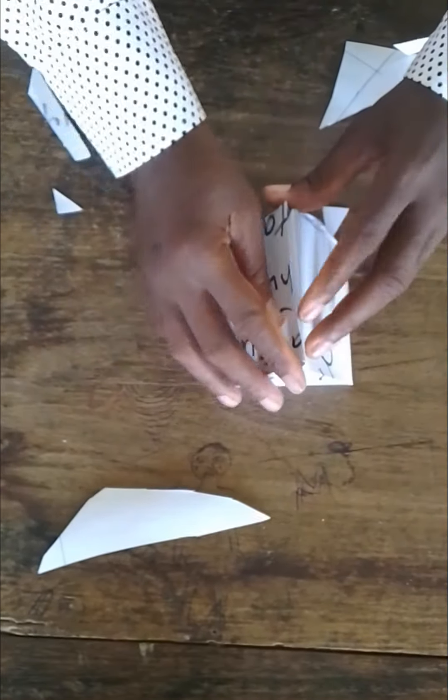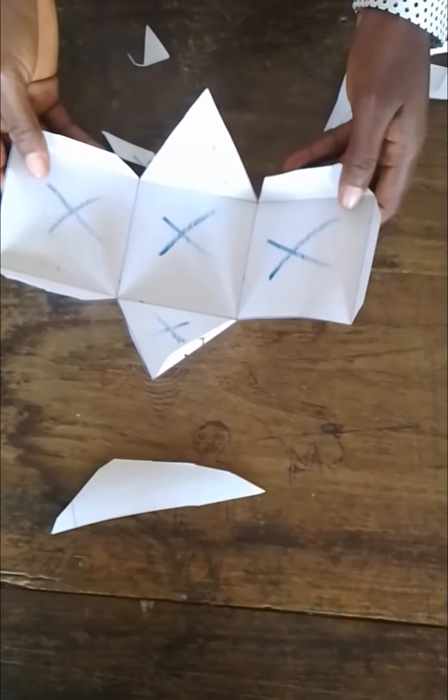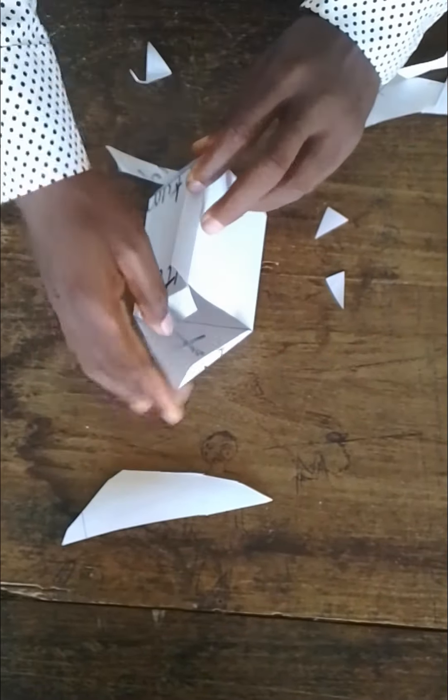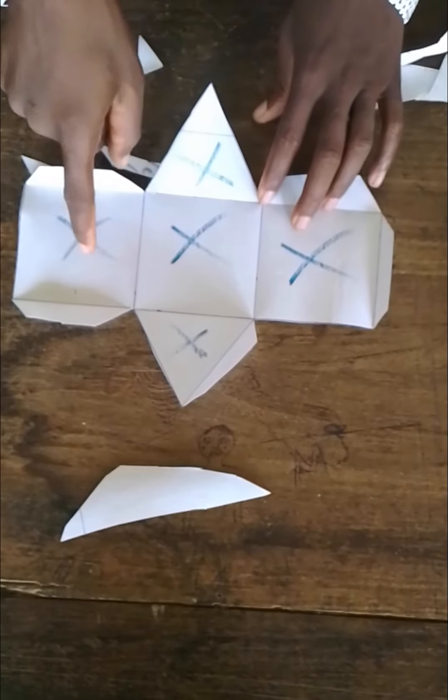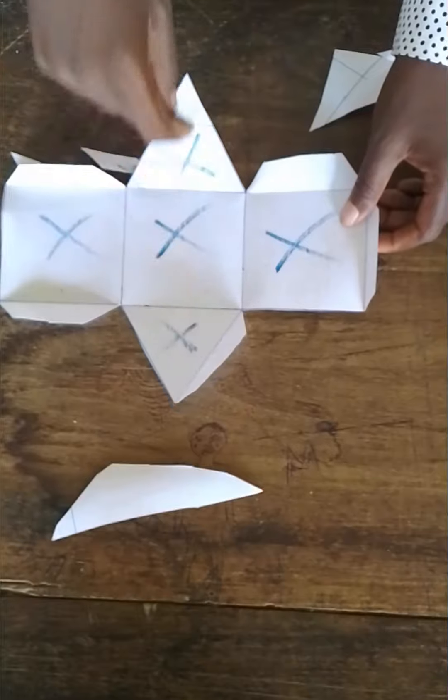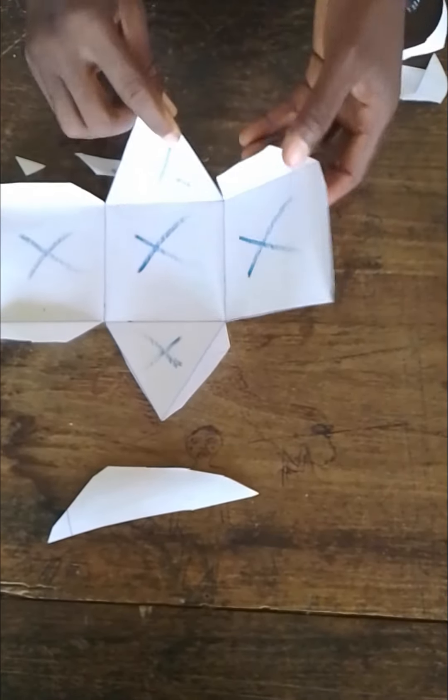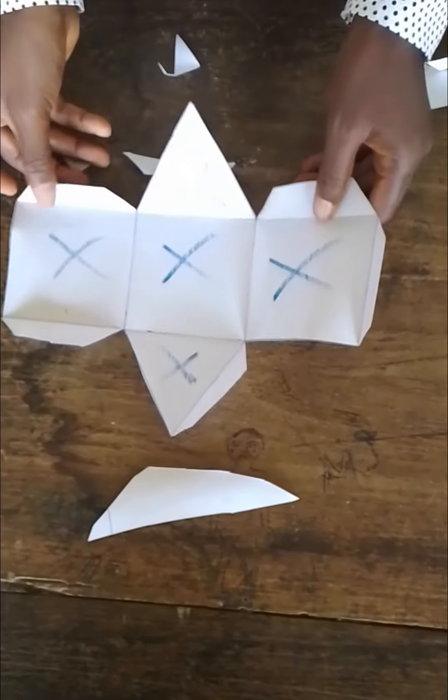If I close this now, in calculating the total surface area of this prism, you can see it has one, two, three squares. You are going to find the areas of these three squares and the areas of these two triangles to form the total surface area of the square base prism. Thank you.